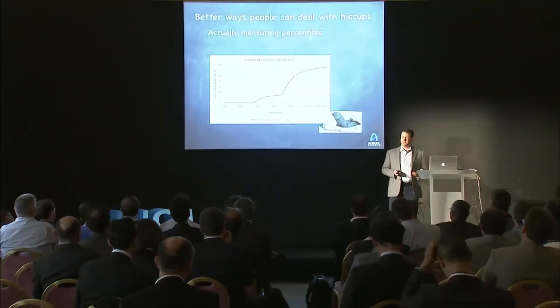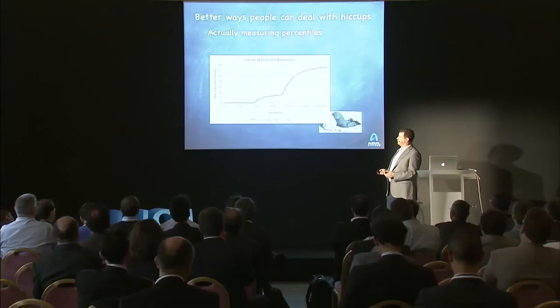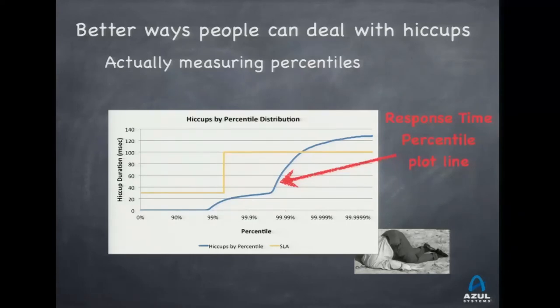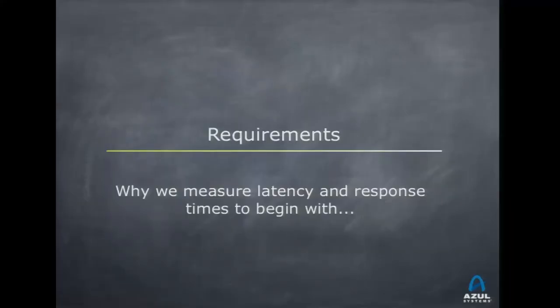Better approaches include actually measuring percentiles and stating requirements as specific values at each level. You can see multiple modes: a good mode, a somewhat bad mode, and a terrible mode. Requirements depend on your application — different applications have very different drivers for requirements.